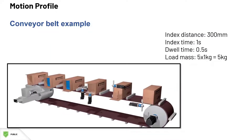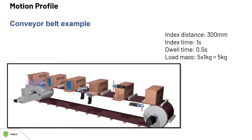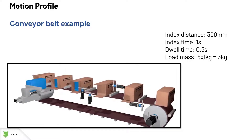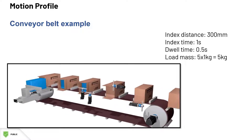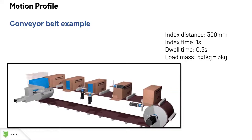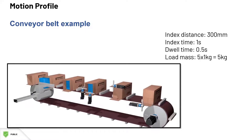Let's go back to our packaging machine and take our conveyor belt as an example. We can see that the axis type is linear since the load is moving in a linear fashion. The index advance is 300 mm. Each index advance is made in one second and the conveyor belt dwells for half a second for operations like filling the boxes and closing them. The mass of each full box is 1 kg and there are 5 boxes on the conveyor at a time.